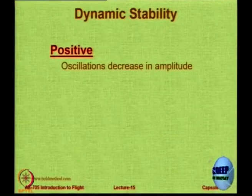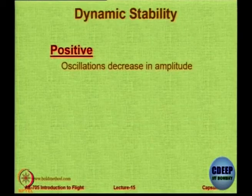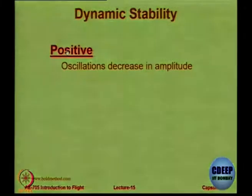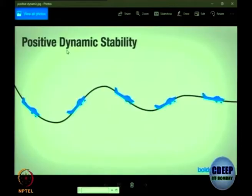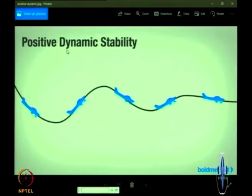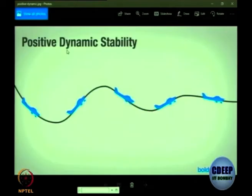Now, dynamic stability: whereas static stability concerns only the initial tendency, in dynamic stability we want the aircraft to actually return to the original position on its own — not just intention, but actually coming back. An aircraft has positive dynamic stability if oscillations after disturbance reduce in amplitude with time. If oscillations damp out very fast, it is highly dynamically stable. If oscillations do not damp out, it is neutrally stable. If oscillations increase, it is unstable.